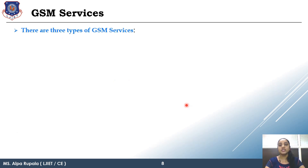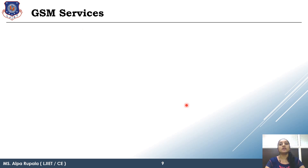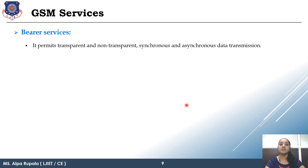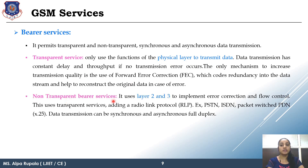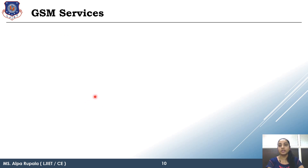Next topic is GSM services. There are basically three types of services in GSM: Bearer service, Tele service, and Supplementary service. Bearer service is further divided into two types: transparent service and non-transparent service. Bearer service is a special kind of service that a subscriber uses for data sending. Transparent service operates at the physical layer for transmission and does not do error control or flow control. Non-transparent bearer service uses Layer 2 and Layer 3 — that is Data Link Layer and Network Layer — and also performs error correction and flow control.